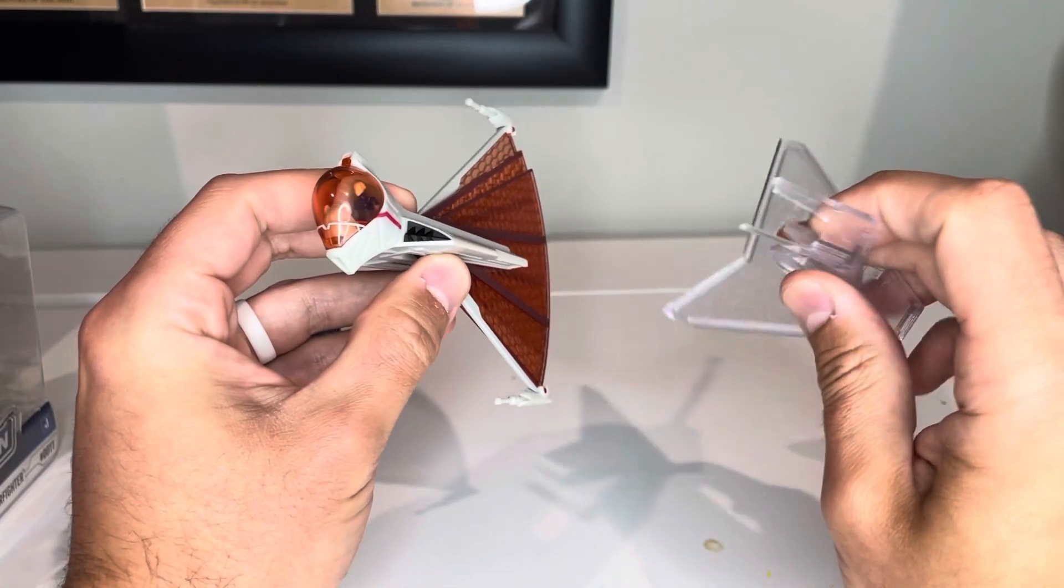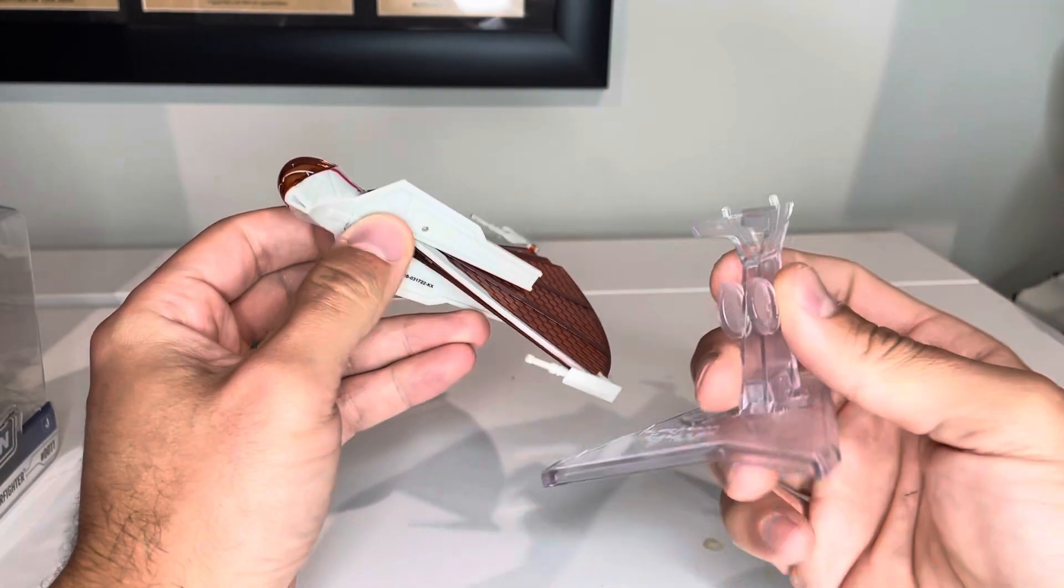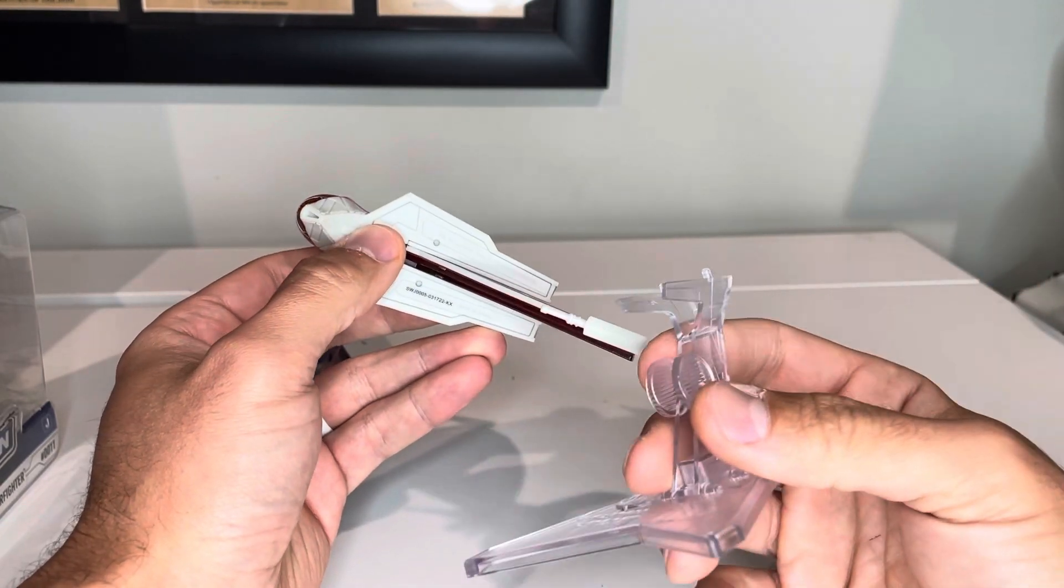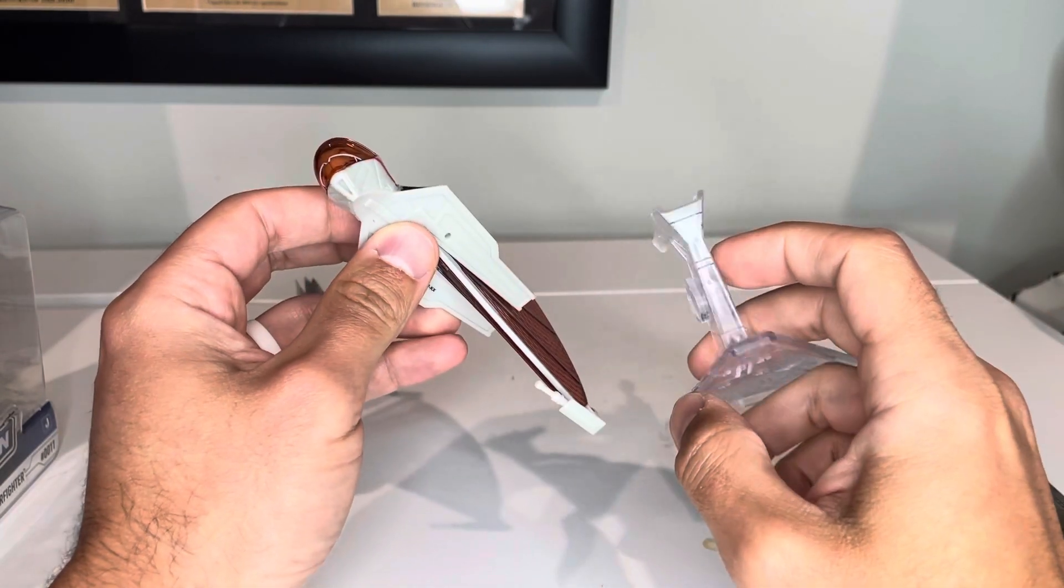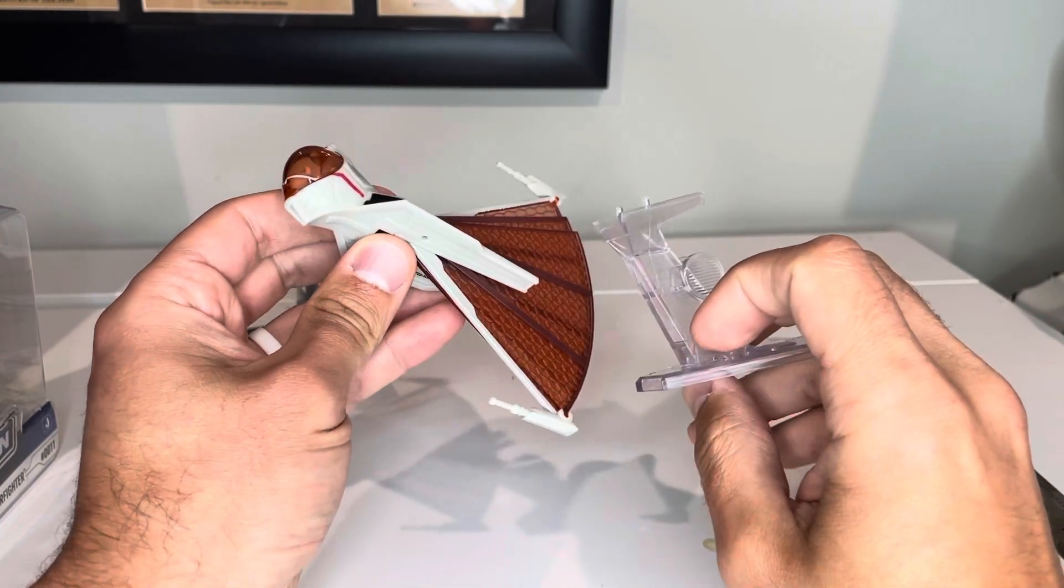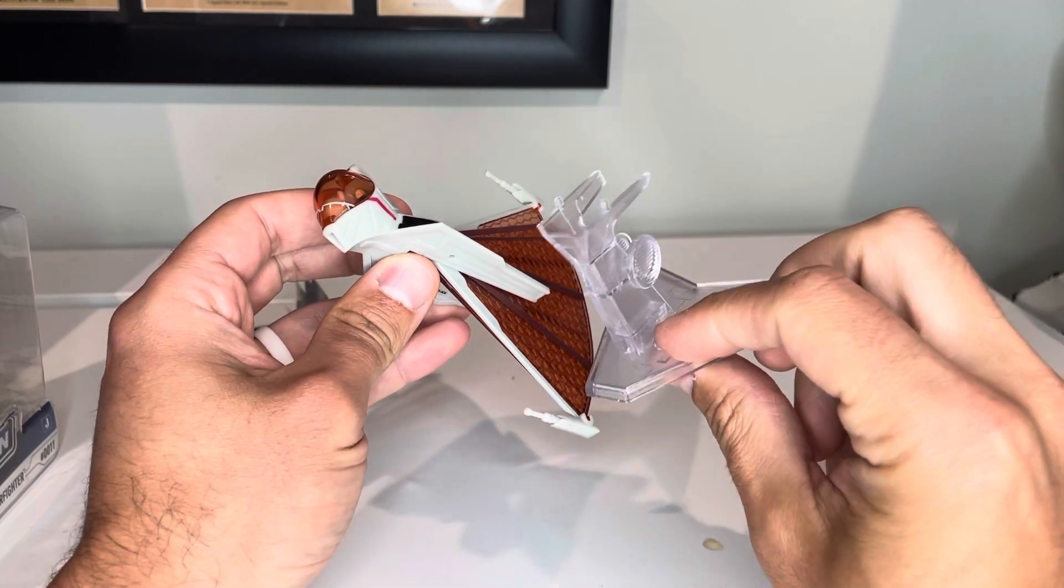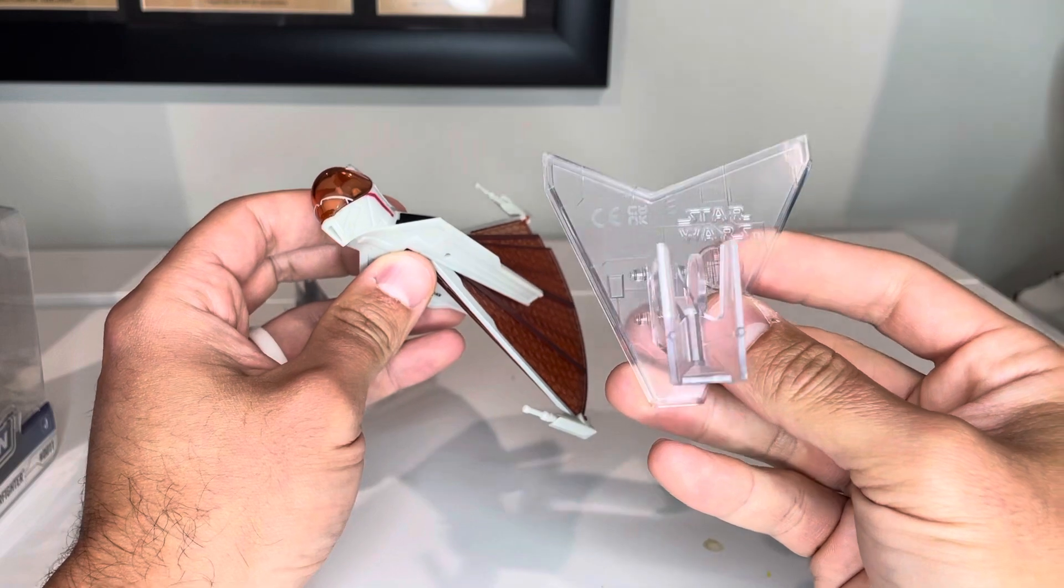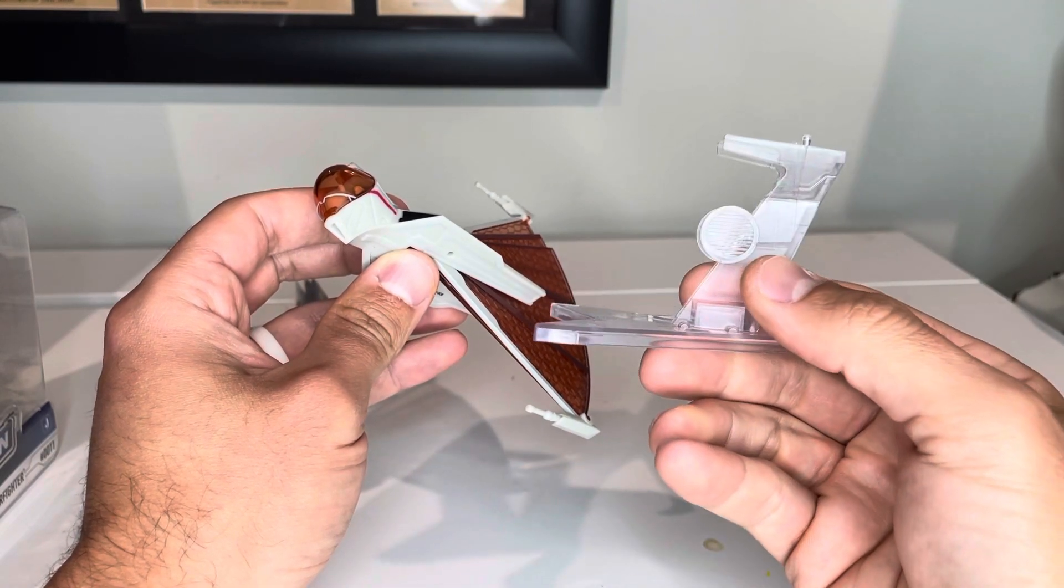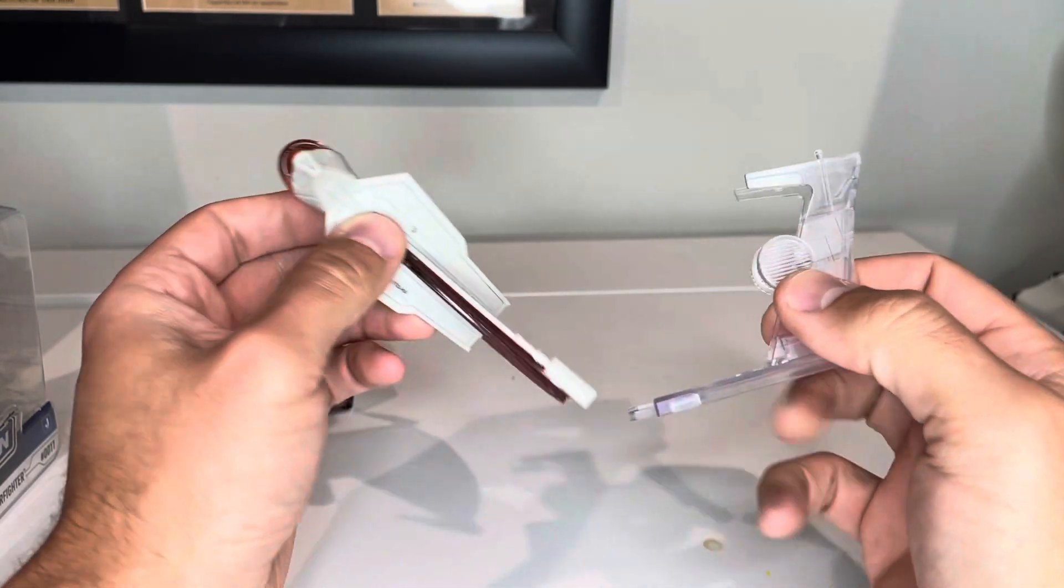I really hope that they do more of these stands. None of the actual other items in this line have peg holes for them to be able to be on stands, but this one does come with a stand and it looks really nice. It's got the Star Wars logo on it, this detailing on the side, and you can see the two peg holes on the bottom.